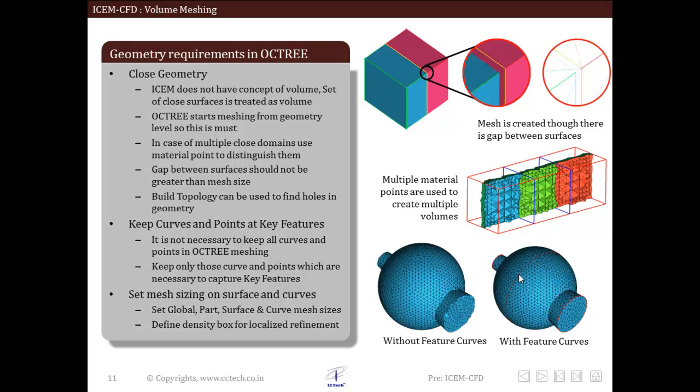Now we will see geometry requirements for robust octree volume mesh. Some important points regarding geometry cleanup for robust octree will be discussed. First is closed geometry. Many softwares, for example like Gambit, have volume as higher topology entity to surface. Closed loop of surfaces forms volume, but in this approach if one or more surfaces are dirty or not well defined, it is very difficult to create volumes and geometry cleanup process becomes laborious or time consuming.